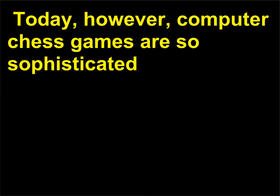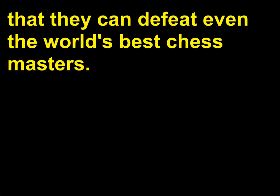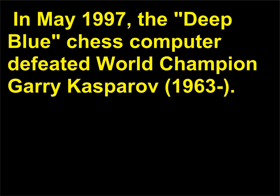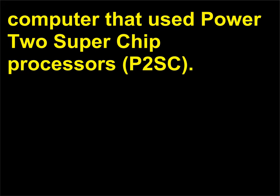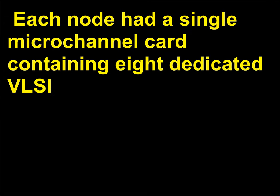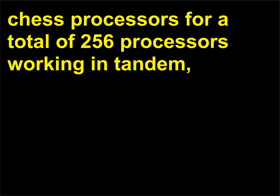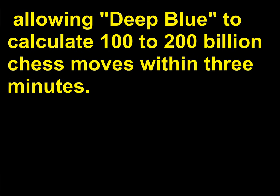Today, computer chess games are so sophisticated that they can defeat even the world's best chess masters. In May 1997, the Deep Blue chess computer defeated world champion Garry Kasparov. Deep Blue was a 32-node IBM RS/6000 SP high-performance computer that used Power2 SuperChip processors (P2SC). Each node had a single microchannel card containing 8 dedicated VLSI chess processors, for a total of 256 processors working in tandem, allowing Deep Blue to calculate 100 to 200 billion chess moves within 3 minutes.